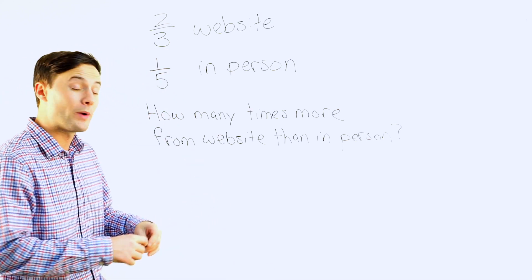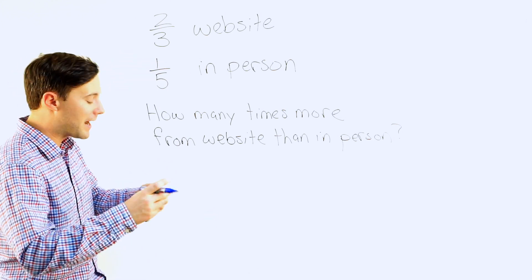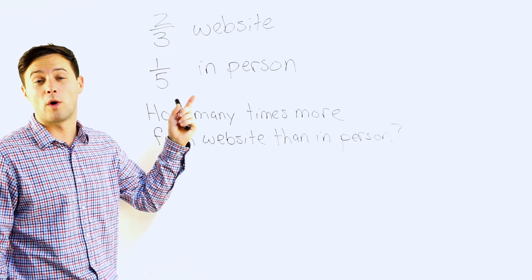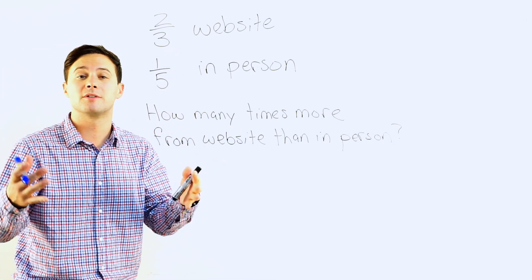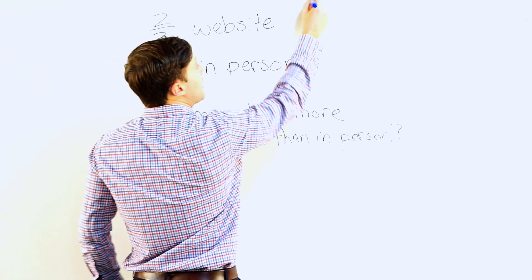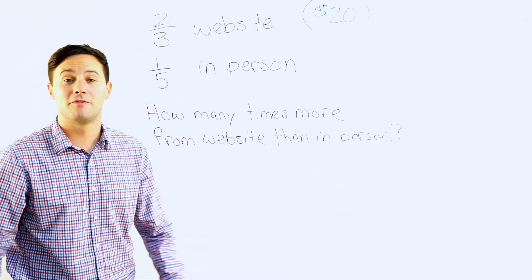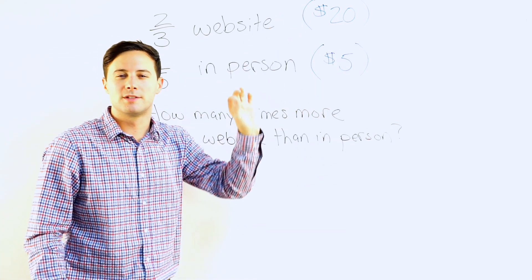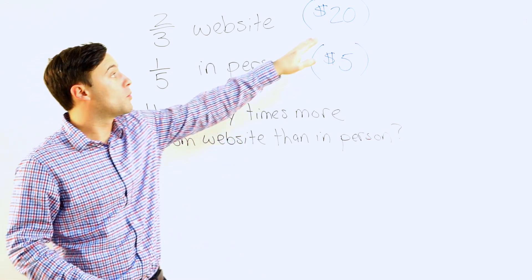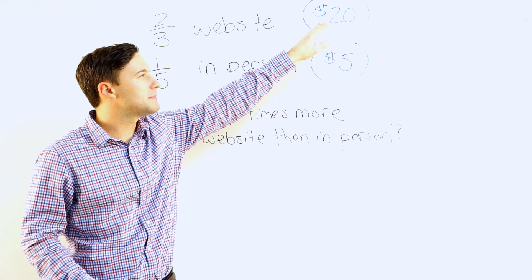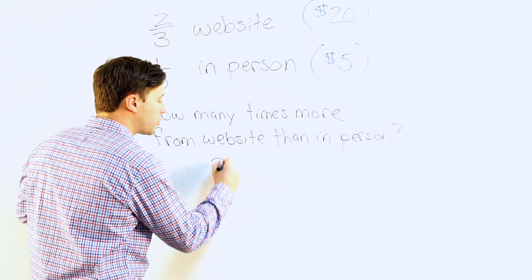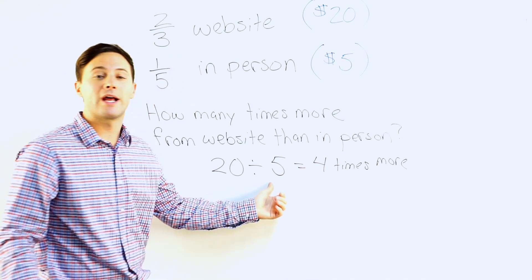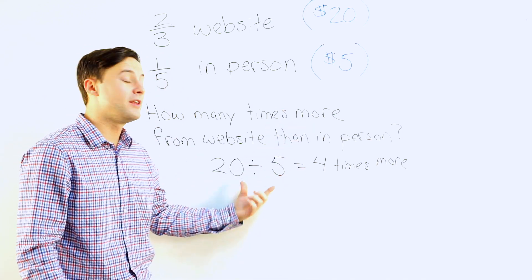I don't know what to do, so in this situation I'm going to change the numbers. We're talking about money to raise, so let's just pick an actual whole number — an amount of money. Two-thirds is greater than one-fifth, so I'm going to make sure the numbers I choose represent that. Let's say the money raised from the website is $20, and instead of a fifth, let's just say $5. If I think of the problem with those numbers: how many times more was raised from the website than in person? Well, if I did 20 divided by 5, that's 4 times more.